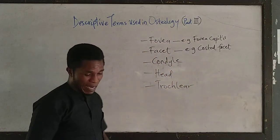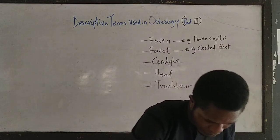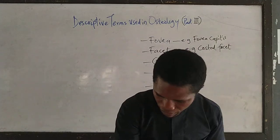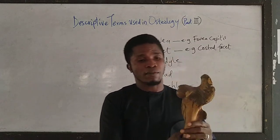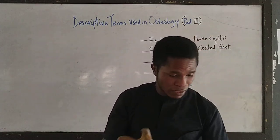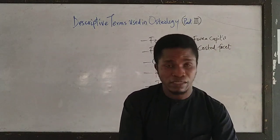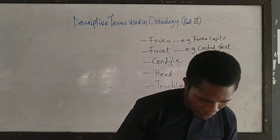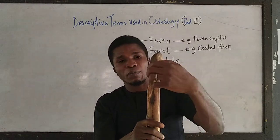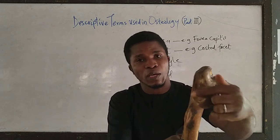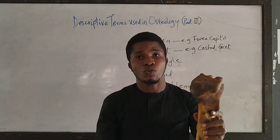The fourth term is head. The femur has a head, and the humerus also has a head. A head is a rounded articular projection. It is rounded. You find that on the head of the femur, and you also find it on the head of the humerus.